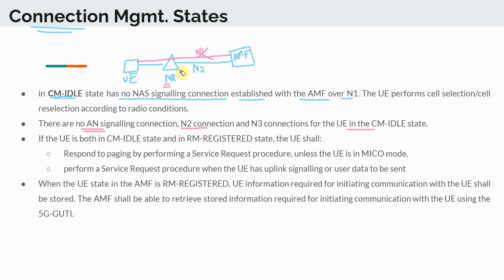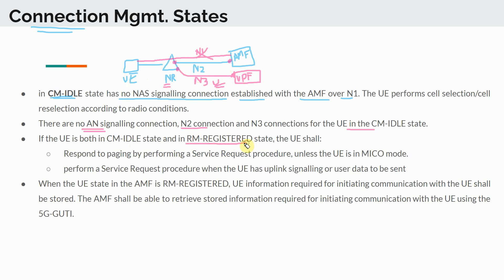The NR also connects to a network function called the User Plane Function (UPF), where all user plane data traffic flows for the subscriber. There are identifiers on the N2 and N3 connections for a given UE at each endpoint. For a UE in idle mode, there are no N2 or N3 connections, because the UE is not actively doing data or signaling — those are dropped entirely in the backend.